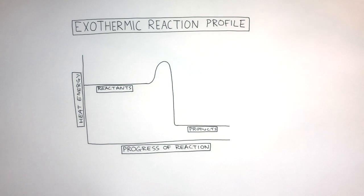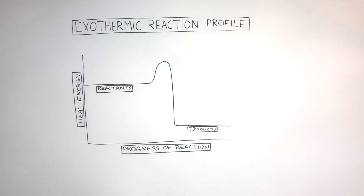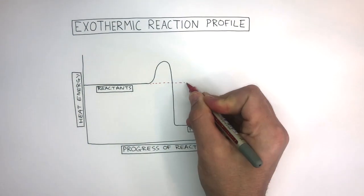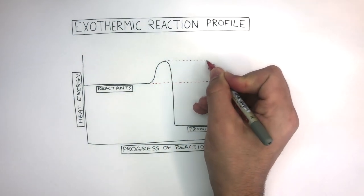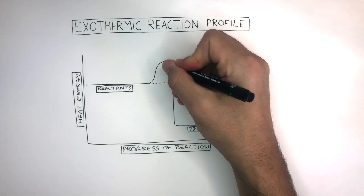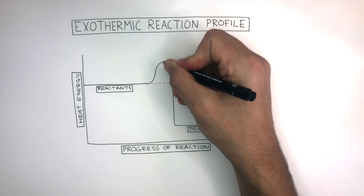The small hump is known as the activation energy. Energy was absorbed from the surroundings to break the bonds between the reactants to get the reaction going. This happens in every chemical reaction — every chemical reaction needs the activation energy to be achieved for the reaction to start.